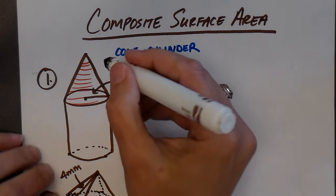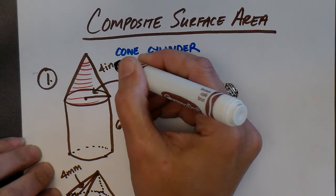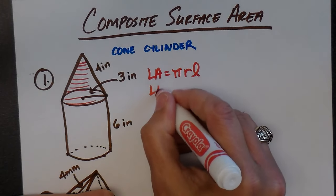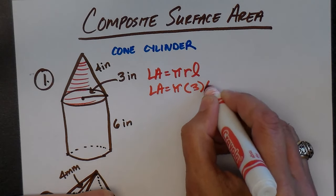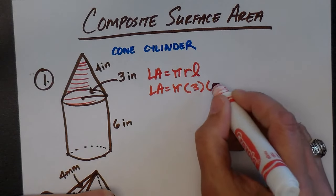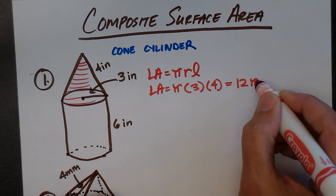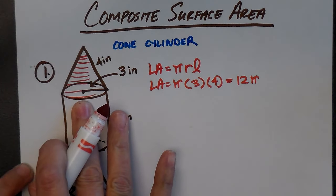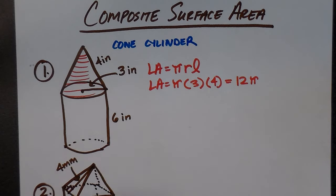The slant height is 4 inches — remember, the slant height goes along the side, not straight up and down. So lateral area equals pi times radius (3) times slant height (4), which gives me 12 pi. That's the lateral area of the cone — no base is showing, just lateral.